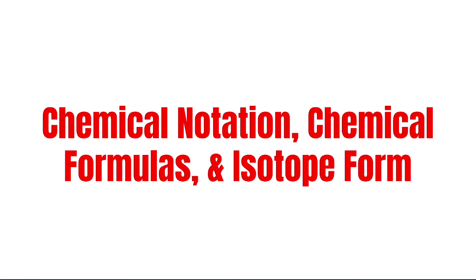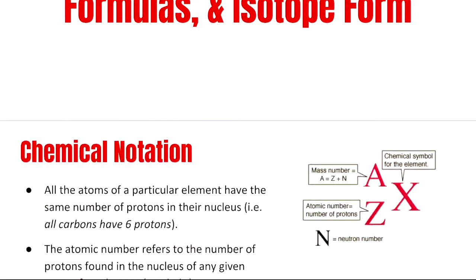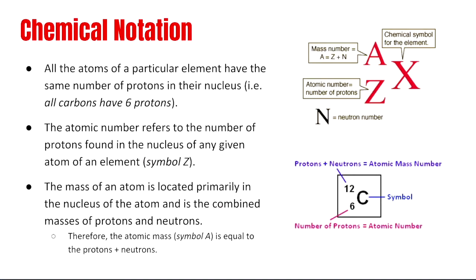Let's look at Chemical Notation, Chemical Formulas, and Isotope Form. This is a continuation of 2.1, and here we have Chemical Notation. All atoms of a particular element have the same number of protons in their nucleus. So all carbons, every type of carbon, has six protons.